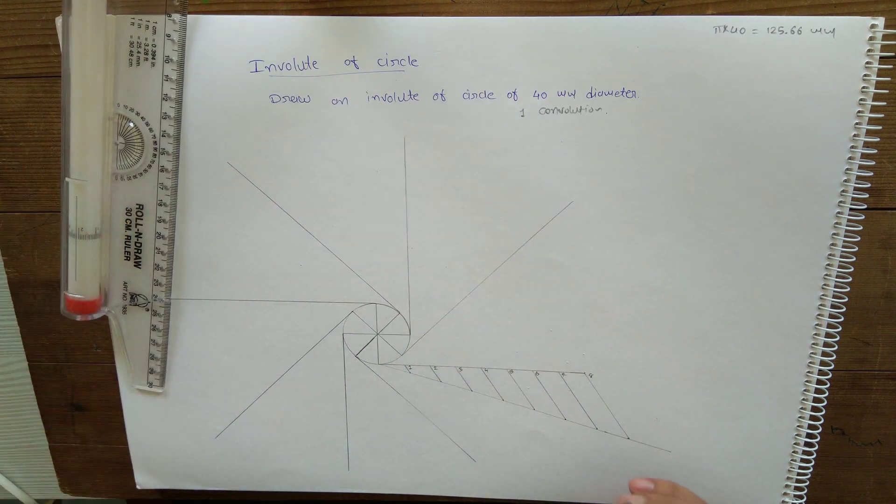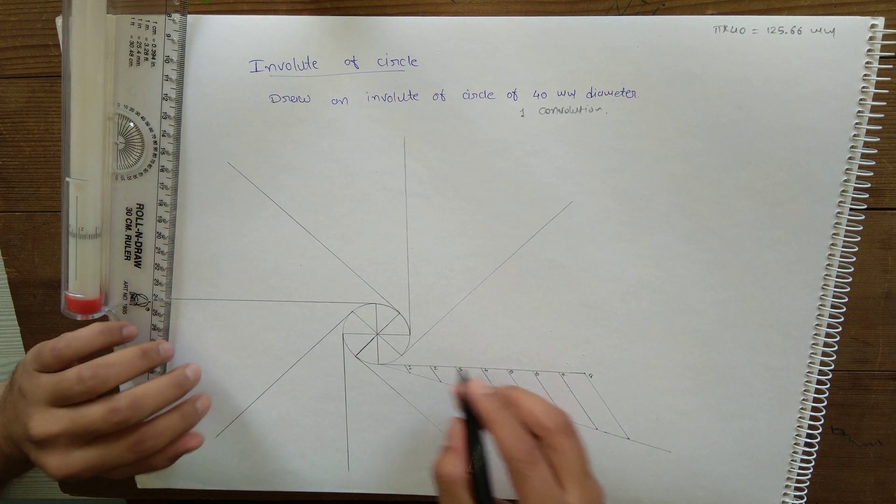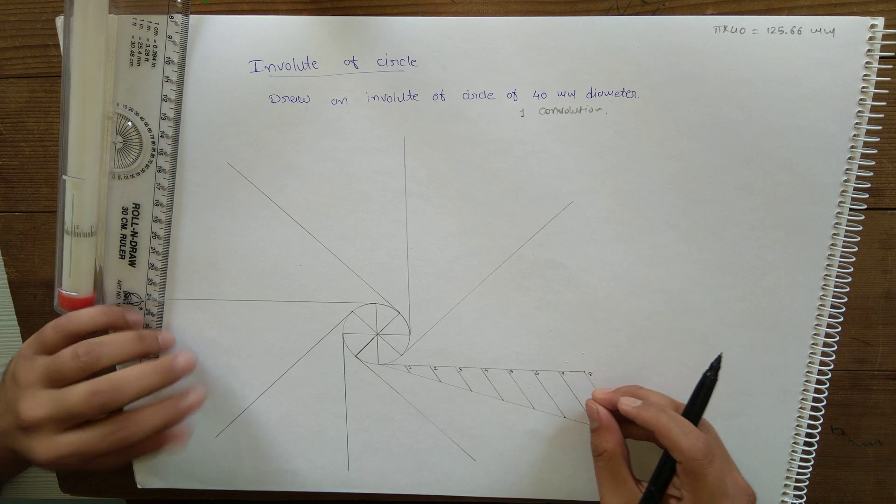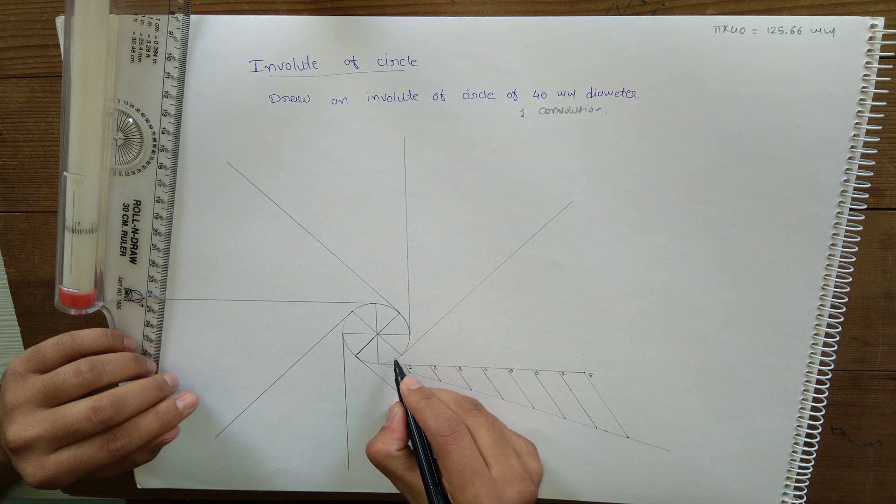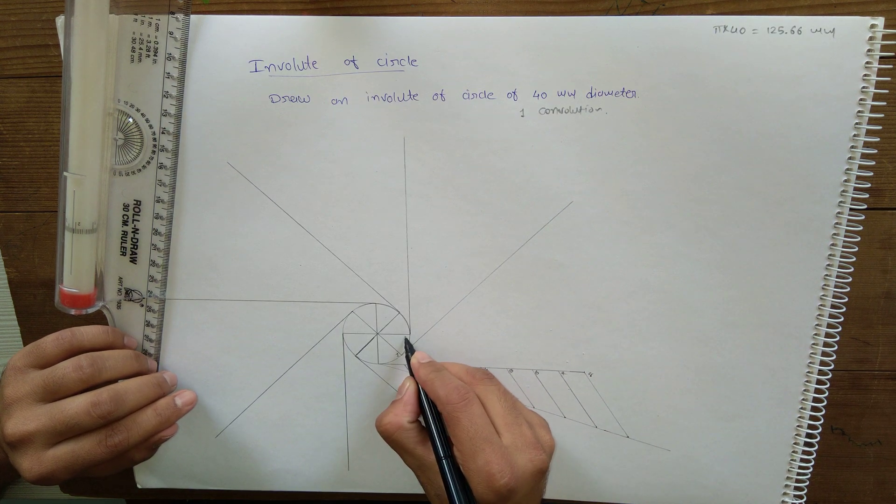So we have all the tangents to the circle. Now imagine that we are going to wind this string in this direction, so first point of contact of the circle will be this, so here it will be one, and accordingly we name different points on the circle.